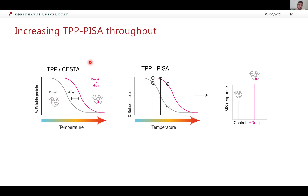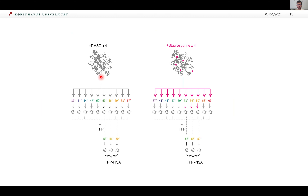In essence, the PISA technique integrates the curve — the peak area — based on three different temperature points. The original authors used 10 different temperature points; I wanted to see if you could go even lower, to maybe streamline it a little bit more. And that's what I did.